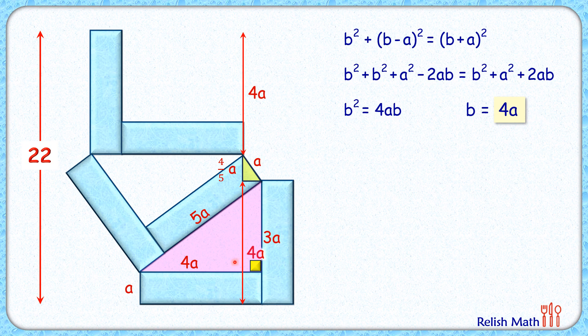Now this full height is 22 centimeters, so we can say that 4a plus 4/5 a plus 4a equals 22 centimeters. Simplifying, we'll get 44/5 a equals 22, or a equals 2.5 centimeters. That's the height of the rectangle, and its length will be 4 times a, which is 10 centimeters.